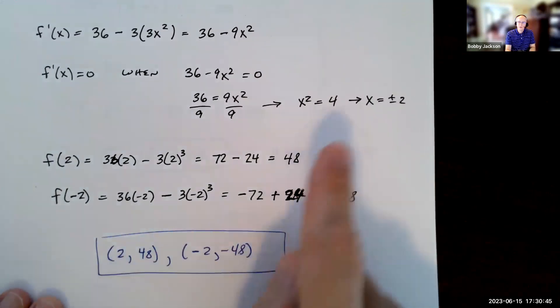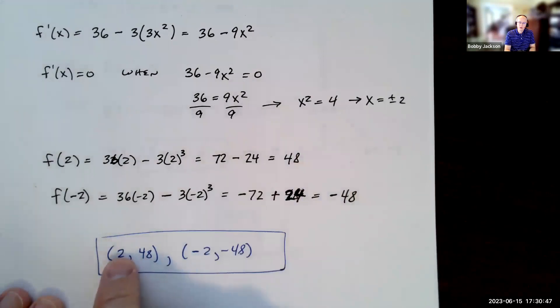So here's the answer they want. The point is (2, 48). That's one point where we have a horizontal tangent line. And then comma, parentheses again, (-2, -48). That's the second point. So we just have two. If you had three, you would just continue to list them, is what they were indicating with that note in the parentheses.